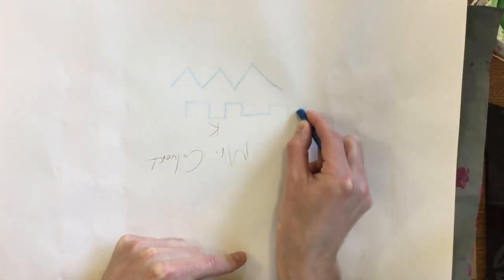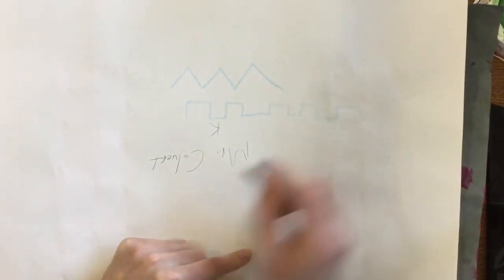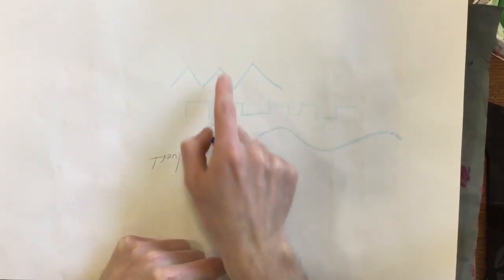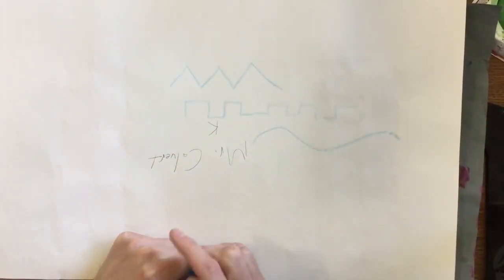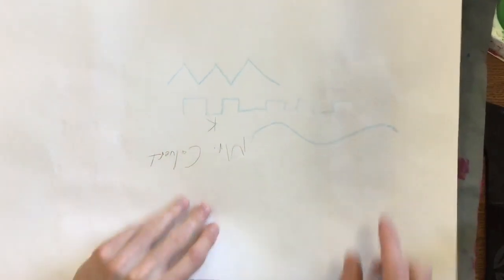Or you could do this curved line. All right, so pick one of these lines that can be the top of your castle. So either an angle, curve, or this castle type line.